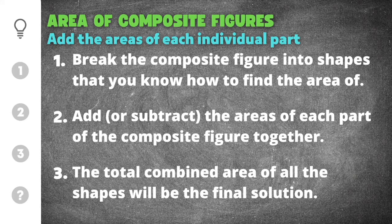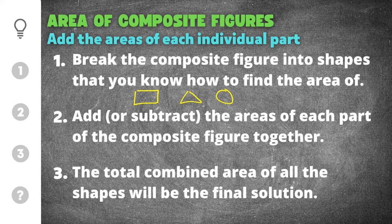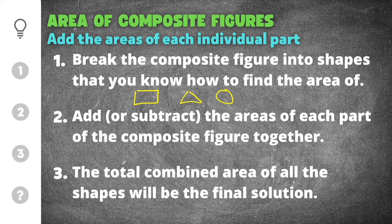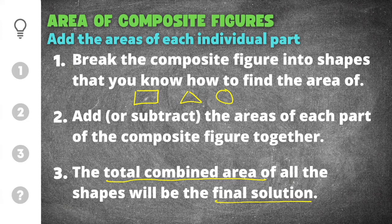Typically, this could be rectangles, triangles, or circles. After you break the composite figure into shapes that you can find the areas of individually, you will add or subtract the areas of each part in order to find the area of the composite figure. After you add or subtract, that total combined area will be the solution.